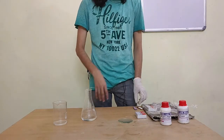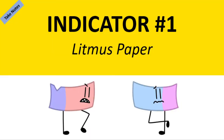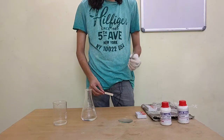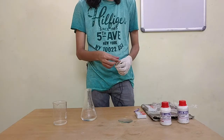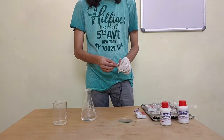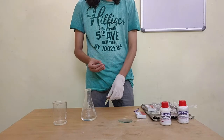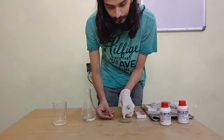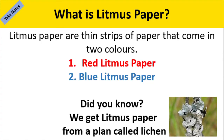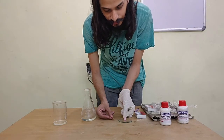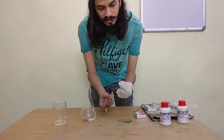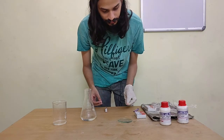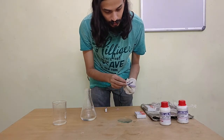The simplest indicator we have is litmus paper. Litmus paper comes in two types: red litmus and blue litmus. I'll use both to test the liquid in the watch glass. Litmus is derived from a plant called lichen. I'll dip the red litmus paper in this liquid — it was red originally, and it's still red after touching the liquid.